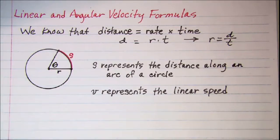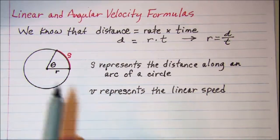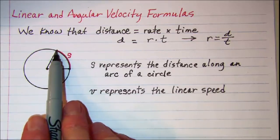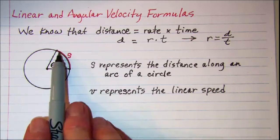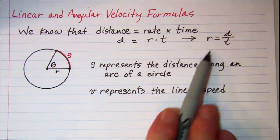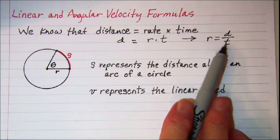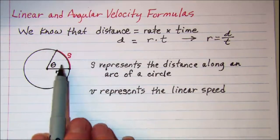Now when we talk about linear and angular velocity, usually we are talking about how fast a point will move along an arc of a circle. What we are going to do then is take this formula, rate is equal to distance divided by time, and use these variables.